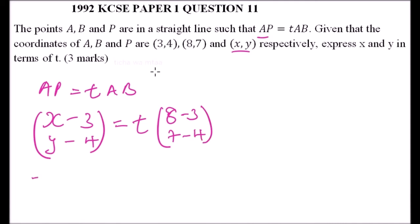This gives us (x-3, y-4) equals the bracket. Opening the bracket: 8 minus 3 is 5, so we have 5t. 7 minus 4 is 3, so we have 3t.